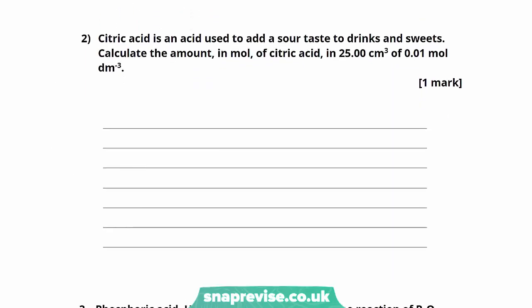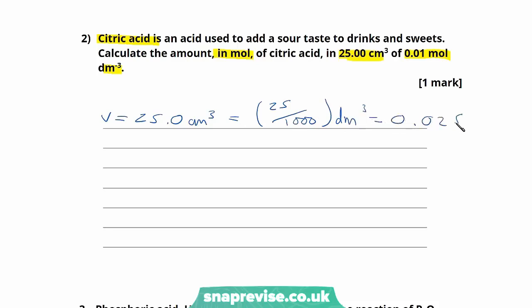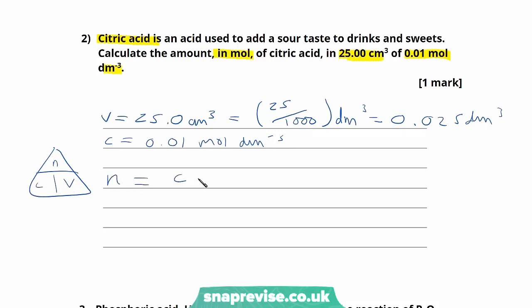Let's look at the second question. Citric acid is an acid used to add a sour taste to drinks and sweets. Calculate the amount in moles of citric acid in 25 centimetres cubed of 0.01 mole per decimetre cubed solution. The volume is 25.0 cm³, which is 0.025 dm³. The concentration is 0.01 mol/dm³. So the number of moles equals 0.01 multiplied by 0.025, giving us 0.00025 moles.